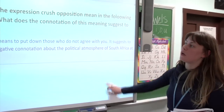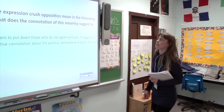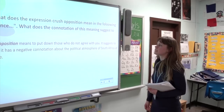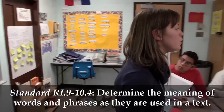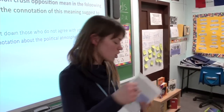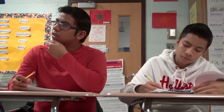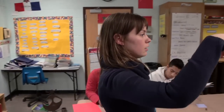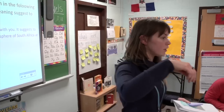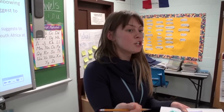Once the pair work is complete, Ms. Boinger reviews the answers to each question with the whole class. What does the expression 'crush opposition' mean in the following sentence? What does the connotation suggest to you? When you hear 'crush opposition,' what kind of connotation comes to mind? Like destroy. So what kind of connotation comes to mind? Denied — denied in a harsh way. Put down. Like when they had to carry around passes and were forced into a small part of Africa while the rich people had all the good parts. So they're crushing their opposition, forcing them into these situations where they have to carry around these pass laws — they're crushing their opposition.